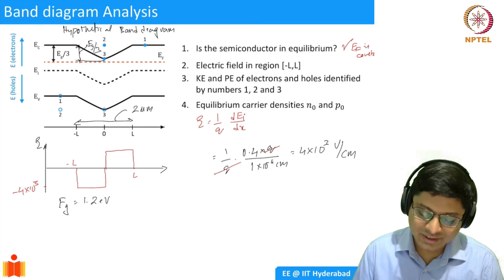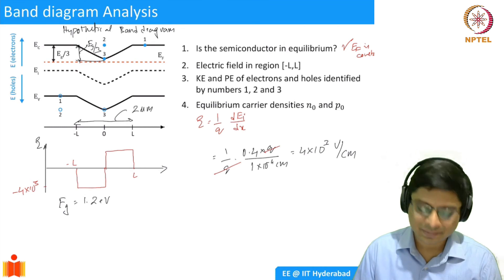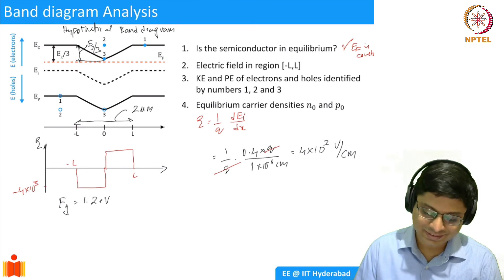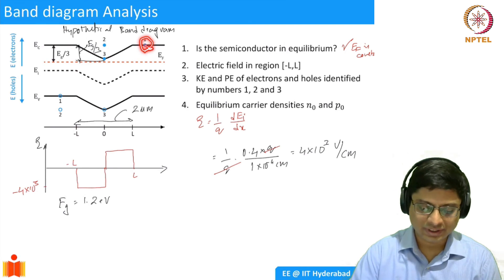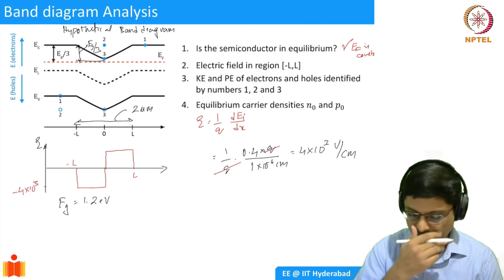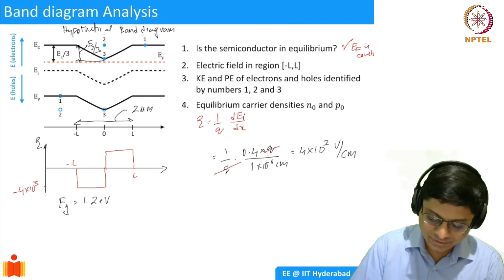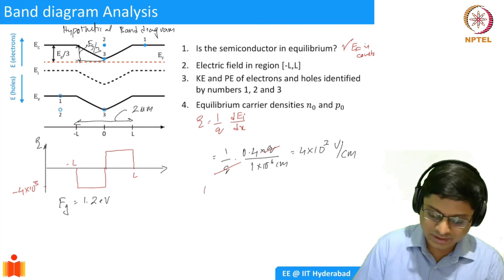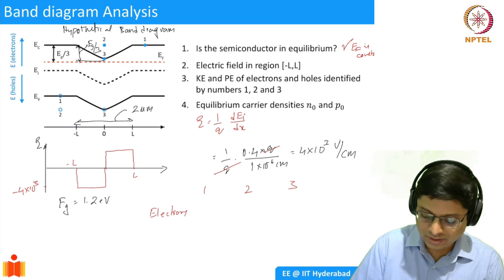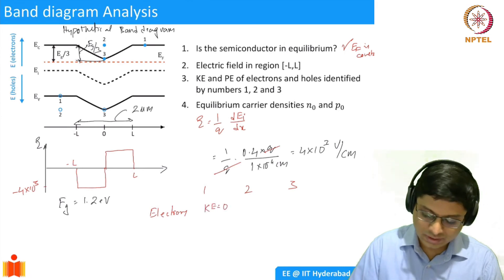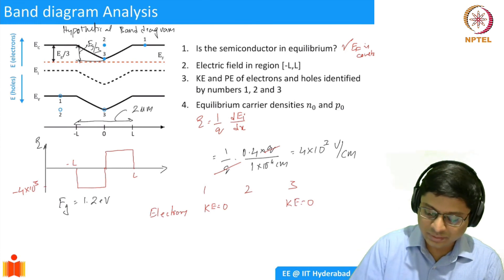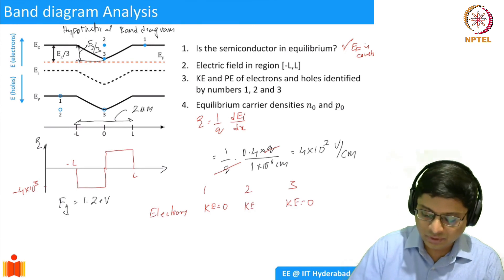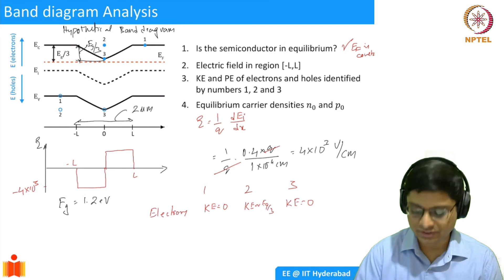The next question is: what is the kinetic energy of electrons and holes at positions 1, 2, and 3? Whenever the electron is at the band edge E_C, its kinetic energy is zero. So at position 1 KE = 0, at position 3 KE = 0, and at position 2, if the bands are bent by E_G/3, then KE ≈ E_G/3.